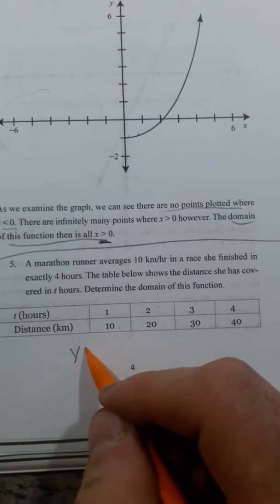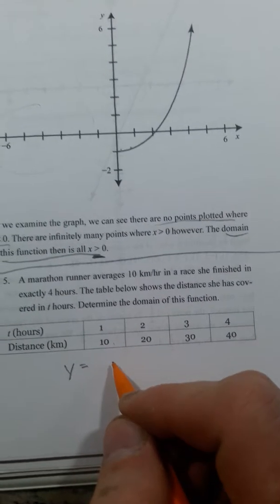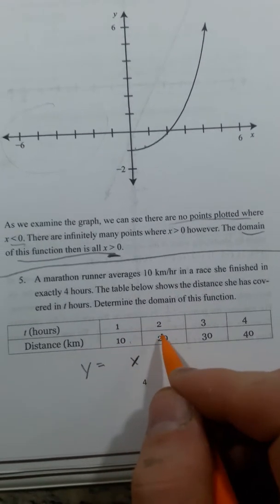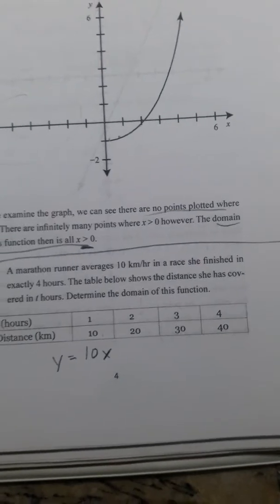So you could take this as a function. It would be y would be distance equals the time, which I'm going to have to be x, and it times it by 10 to get the distance.